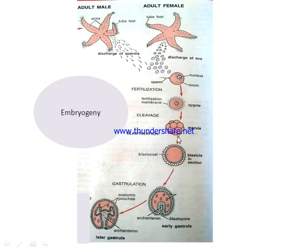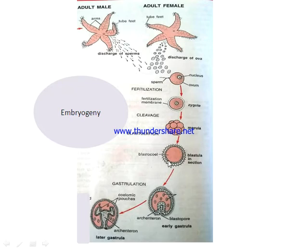Blastula is a single-layered or one-layered ciliated embryo, as you can see in this section. This blastula has an internal cavity called the blastocoel, which is filled with blastocoelic fluid.